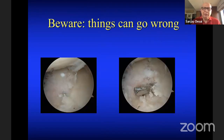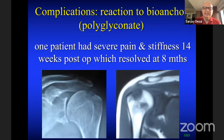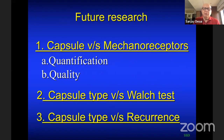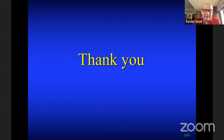Arthroscopic Bankart repair is not an easy procedure — many things can go wrong. There was a case with reaction to bioabsorbable anchors — second-generation polyglyconate anchors — but it resolved with conservative treatment. In summary: arthroscopic Bankart repair with suture anchors for traumatic anterior dislocation is a successful technique, with results equal to open Bankart repair. We should try to evaluate, quantify, and qualify the capsule further, assessing the mechanoreceptors. Thank you very much, IAS.